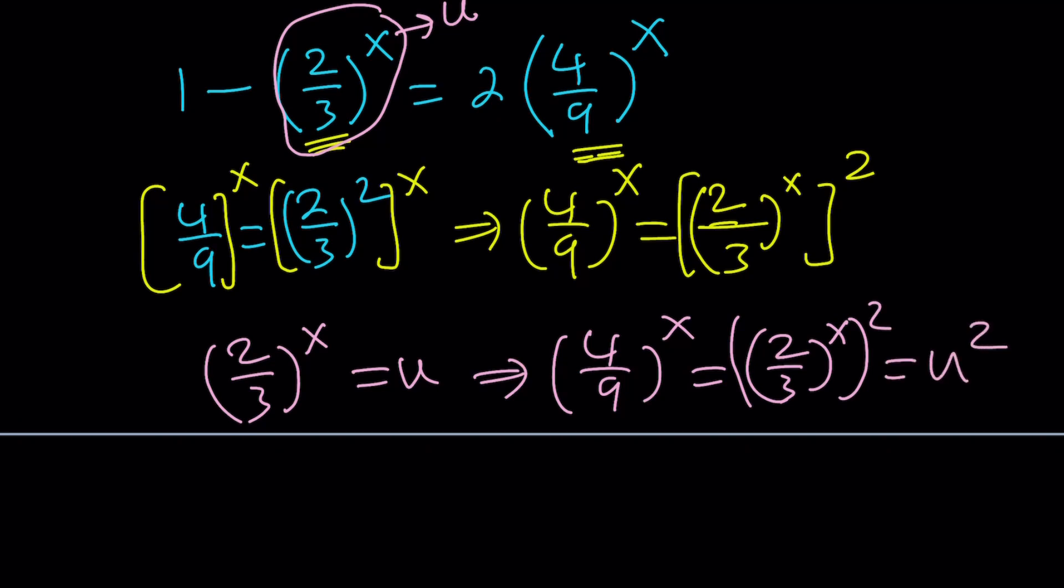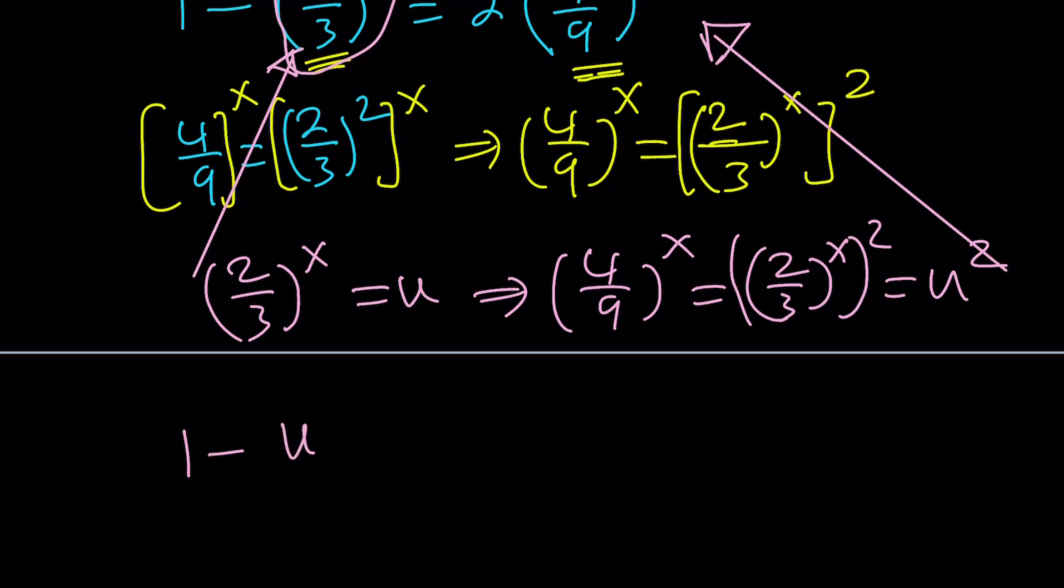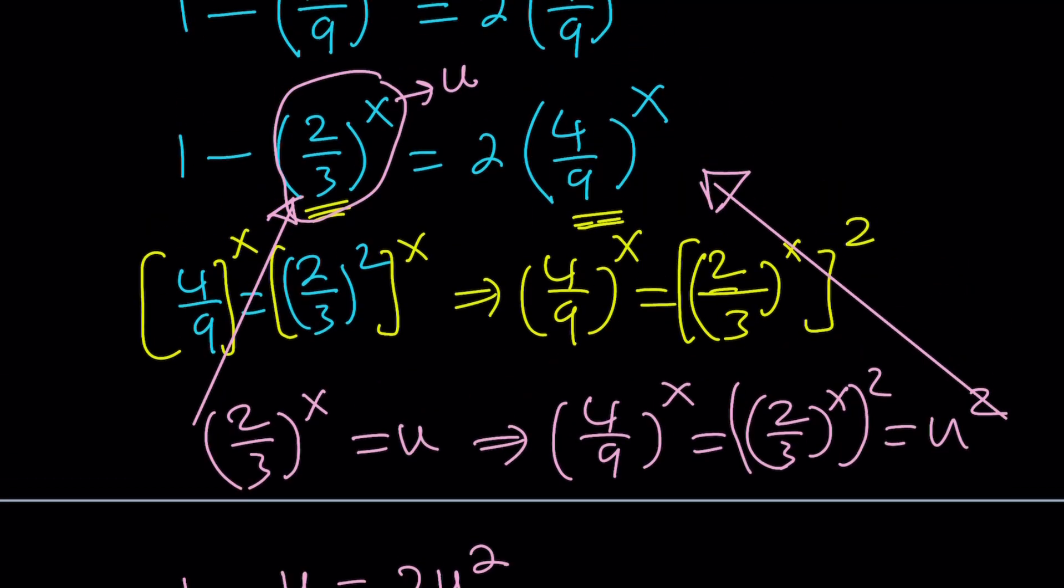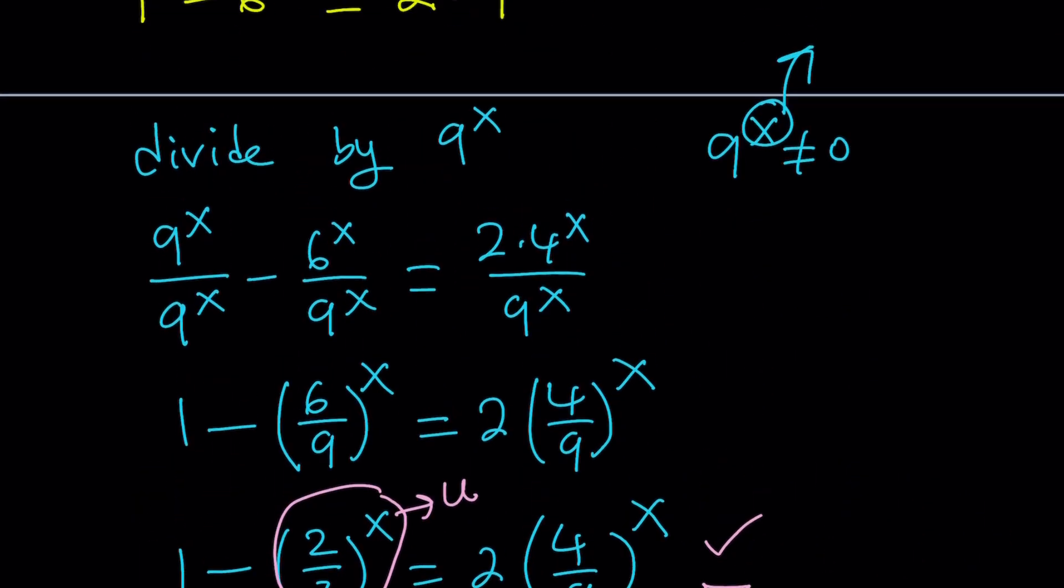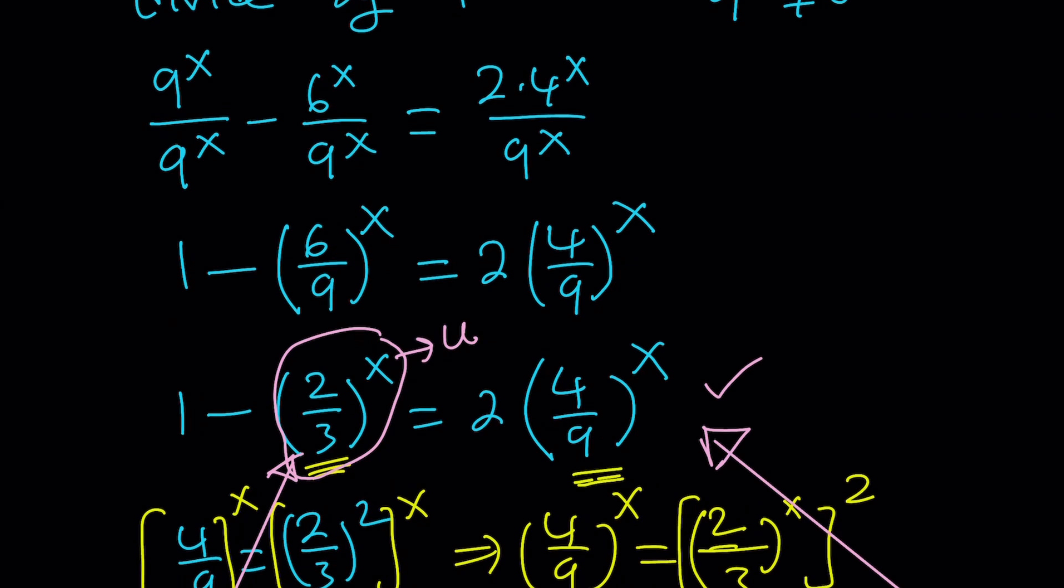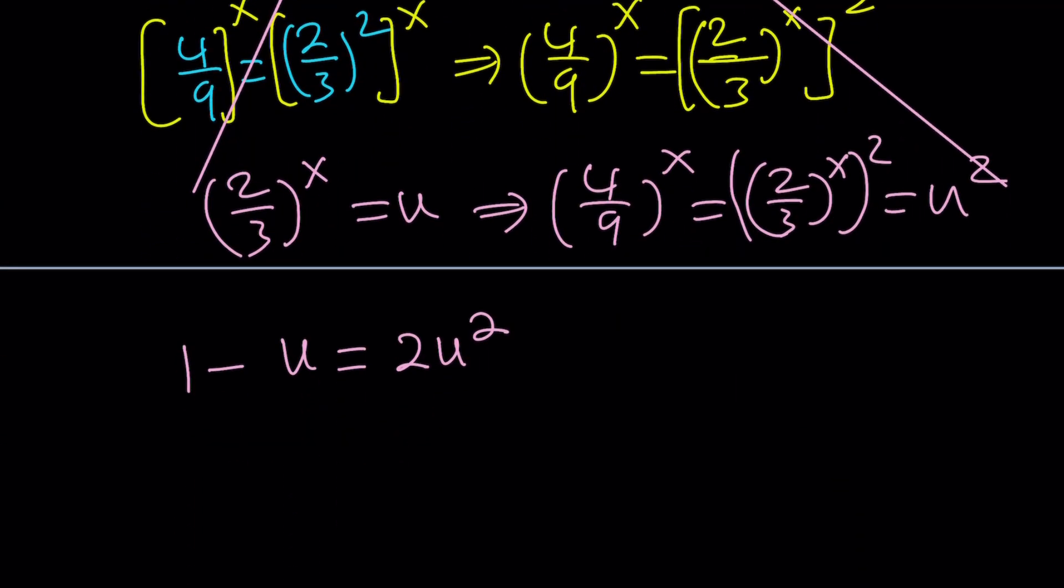We're going to use substitution. Let's replace this with something, how about u? So if (2/3)^x is u, then (4/9)^x is going to be ((2/3)^x)^2, which can be written as u^2. And then we're going to substitute that here and here. We get 1 - u = 2u^2. Awesome.